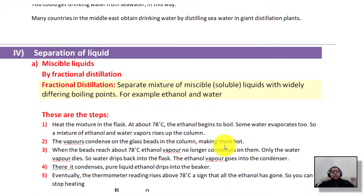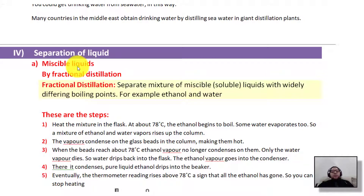In today's lesson we're going to talk about fractional distillation. Fractional distillation is a method used to separate miscible liquids. A miscible liquid is when you have two or more liquids that mix together without separating into layers.